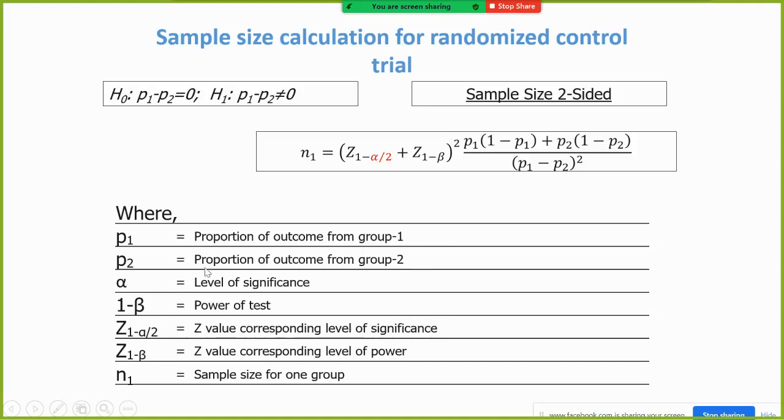Proportion two is the proportion of outcome from two groups, alpha is the level of significance. In the last class we have discussed what is the level of significance and what is the power.